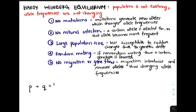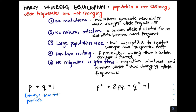There are also some key equations. The first is P + Q = 1, and the second is P² + 2PQ + Q² = 1. The first equation is always true for a population that has two alleles at a certain locus, but the second equation is only true for a population that is in Hardy-Weinberg equilibrium.